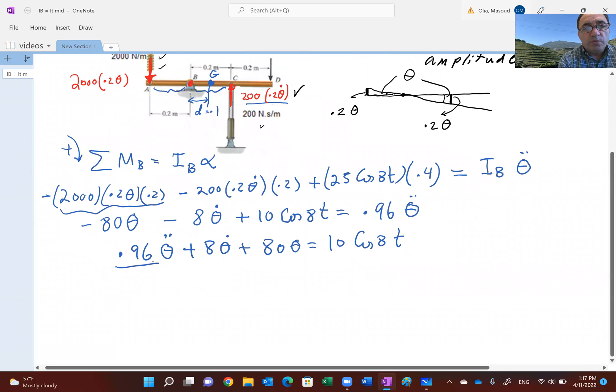Next I want to normalize this, meaning divide by 0.96, so the coefficient of theta double dot becomes 1. If you do that, we'll be able to compare with our template. We end up getting theta double dot plus 8.33 theta dot plus 83.3 theta. Then finally, 10 over 0.96 becomes 10.4167 cosine 8t.